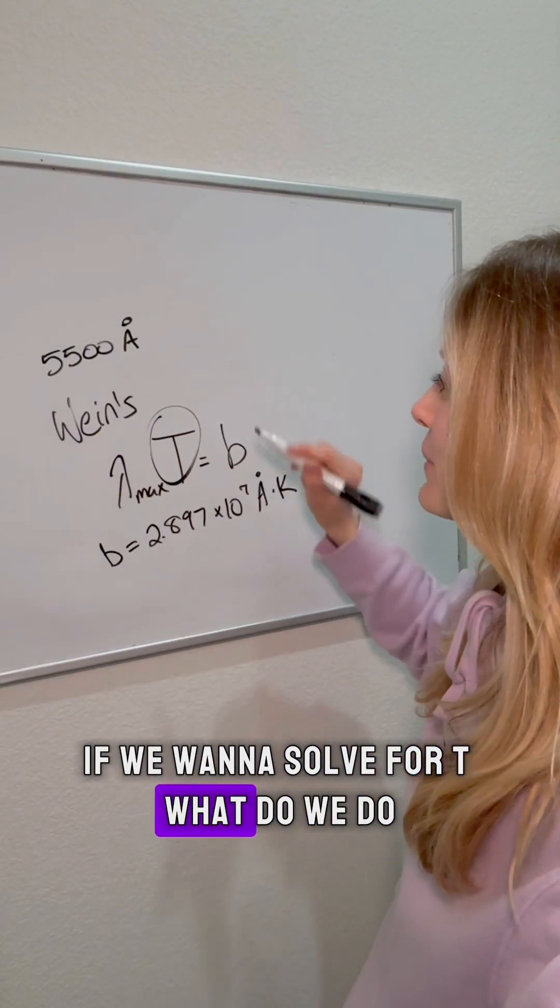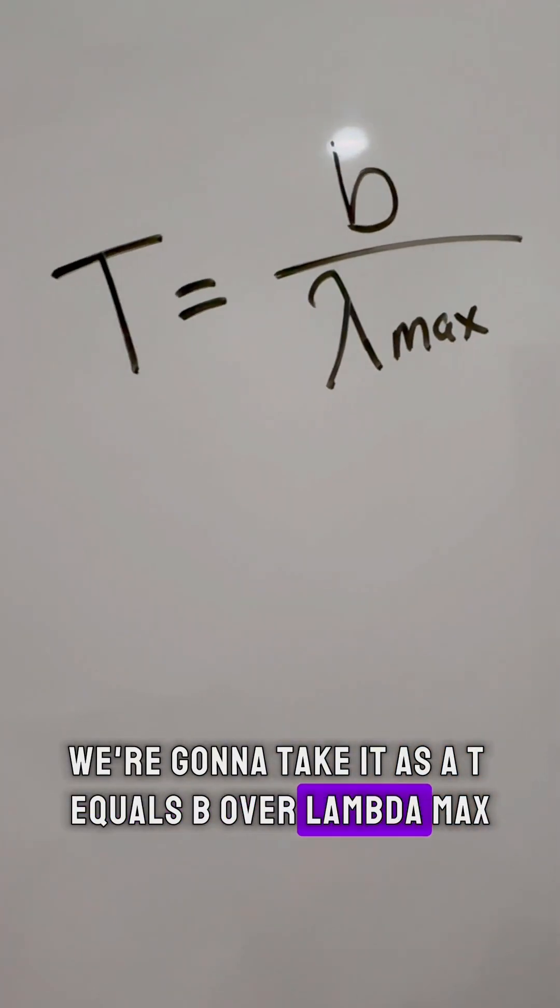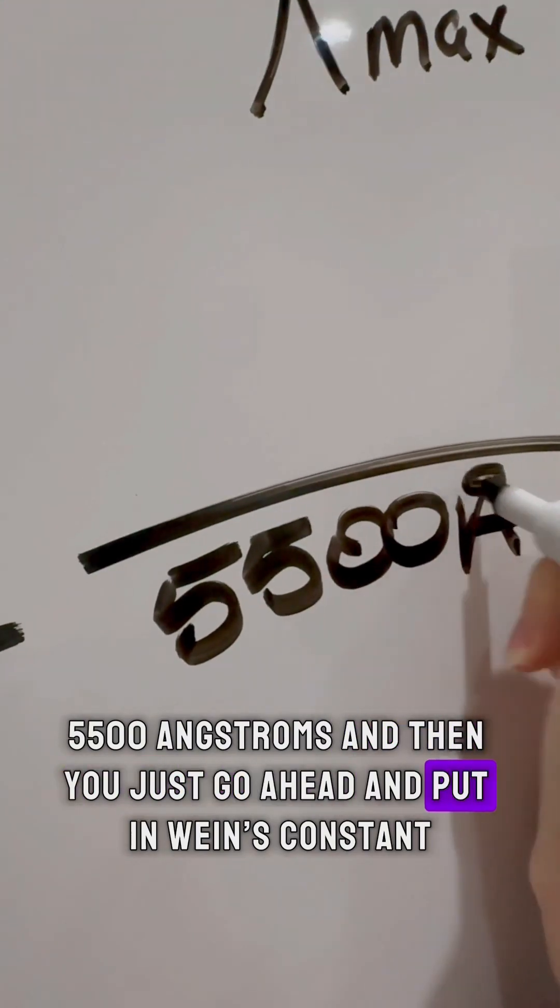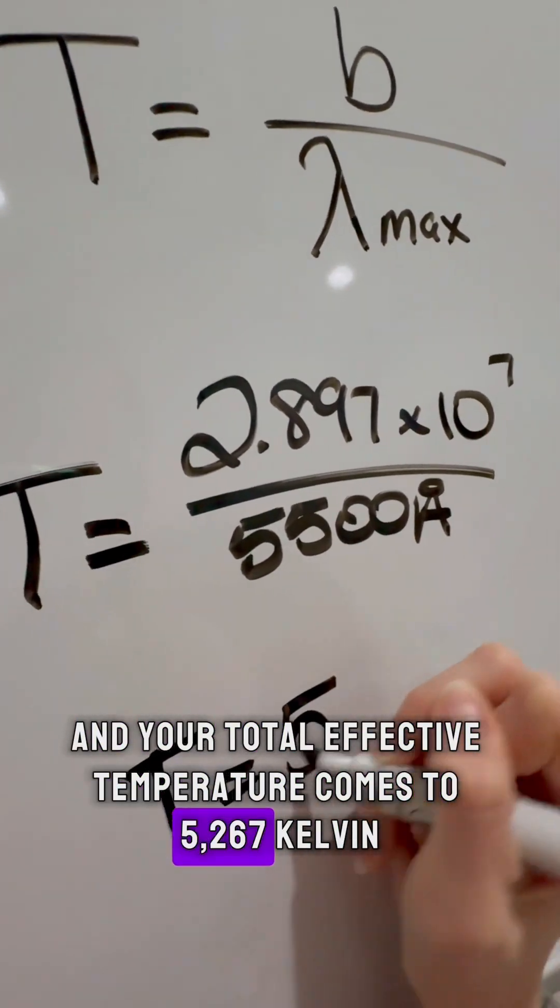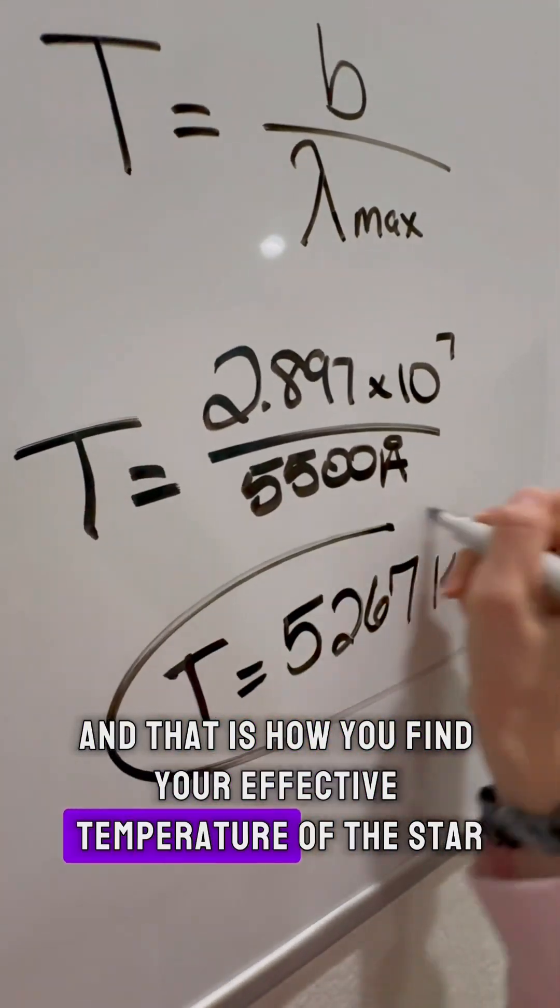Now if we want to solve for T, what do we do? We're going to take it as T equals b over lambda max. And we know that lambda max is at 5,500 angstroms. And then you just go ahead and put in Wien's constant. And your total effective temperature comes to 5,267 Kelvin. And that is how you find your effective temperature of the star.